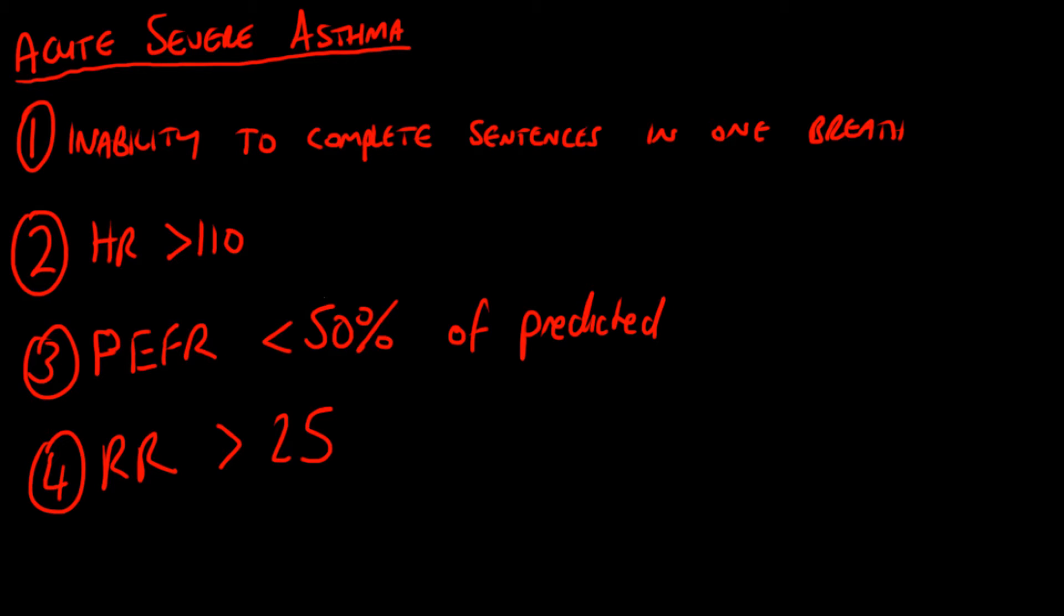A respiratory rate greater than 25. Those are the clinical features of acute severe asthma, and within that there are life-threatening features. These characteristics would classify severe asthma with peak expiratory flow rate less than 50%, inability to complete sentences, respiratory rate greater than 25, and heart rate greater than 110.